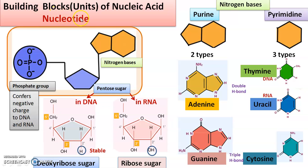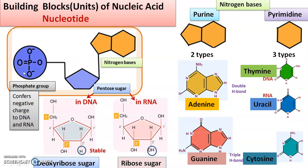Now, building blocks. I have made a block here representing it in the form of a brick. As we discussed, it has got a pentose sugar — a general picture is shown here. We will talk in detail about the difference of the pentose sugar in DNA and RNA. It also has nitrogen bases — any of those bases we discussed — and a phosphate group which is common. The phosphate group confers negative charge to DNA and RNA; DNA and RNA are negatively charged.